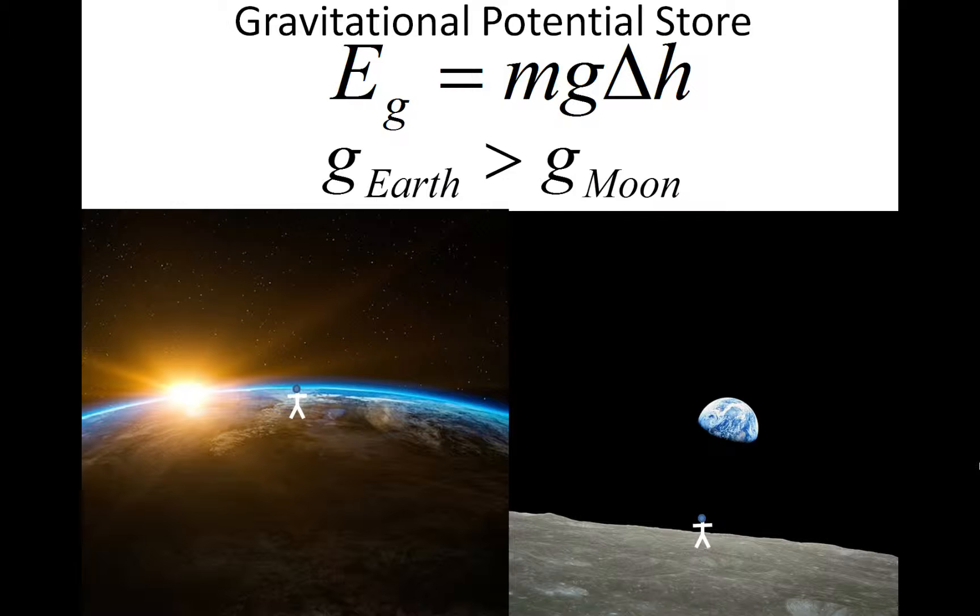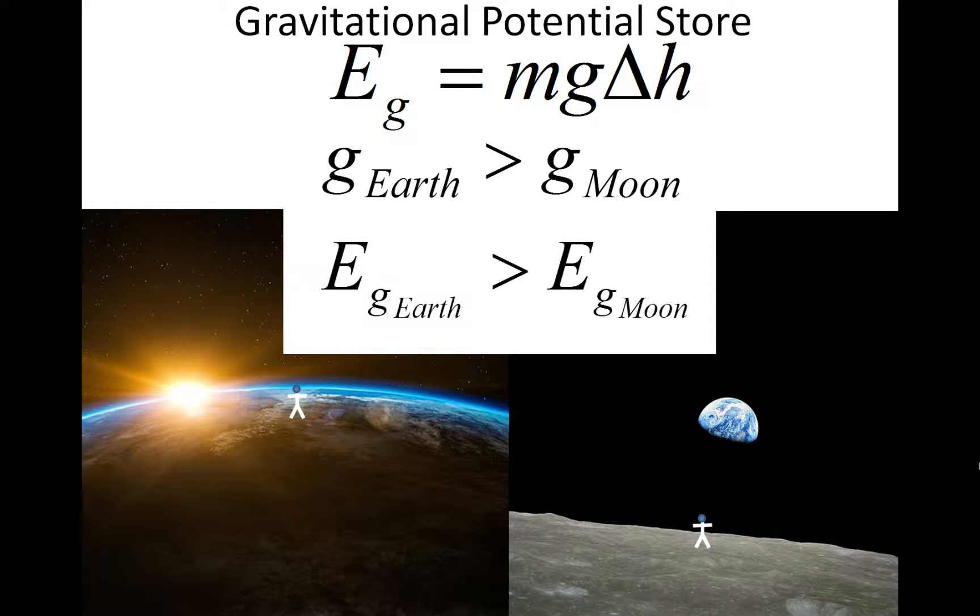So the gravitational field strength of Earth is greater than the gravitational field strength of the Moon. That means on Earth, the energy in the gravitational potential store will be greater than the energy in the gravitational potential store on the Moon.